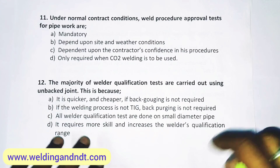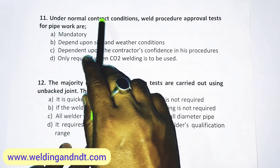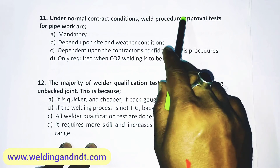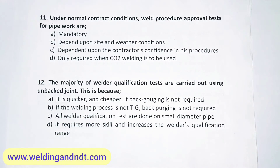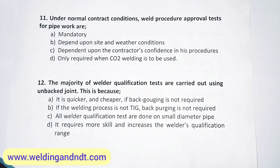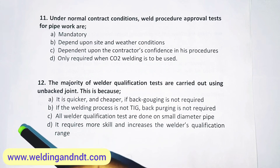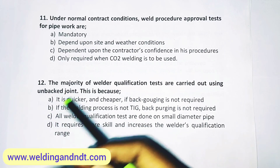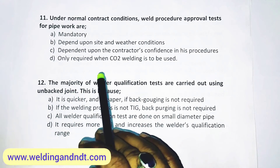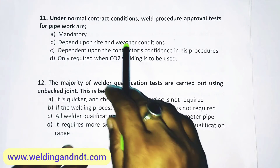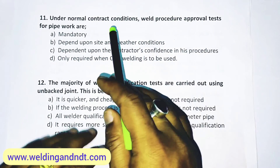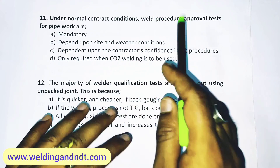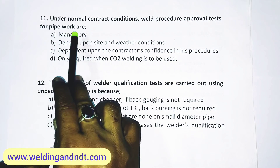Question number 11: Under normal contract conditions, weld procedure approval test for pipe work is mandatory. Whenever you have to start production welding — whether it is piping, pressure vessels, or fabrication — you must have a qualified WPS. This is mandatory work. So the answer is A — mandatory.